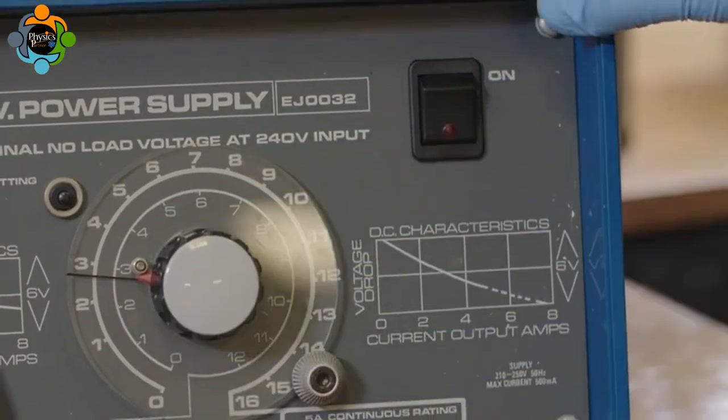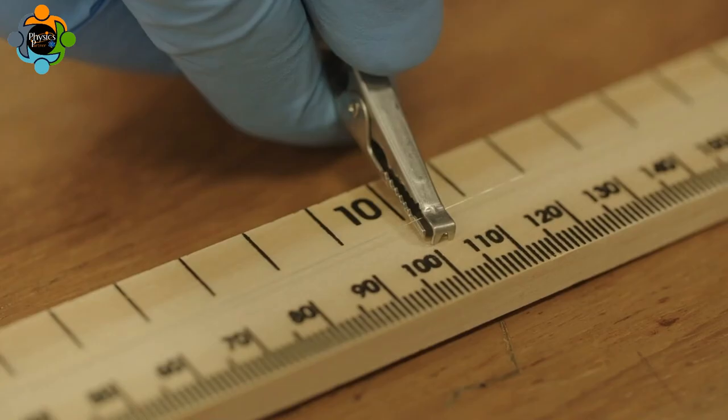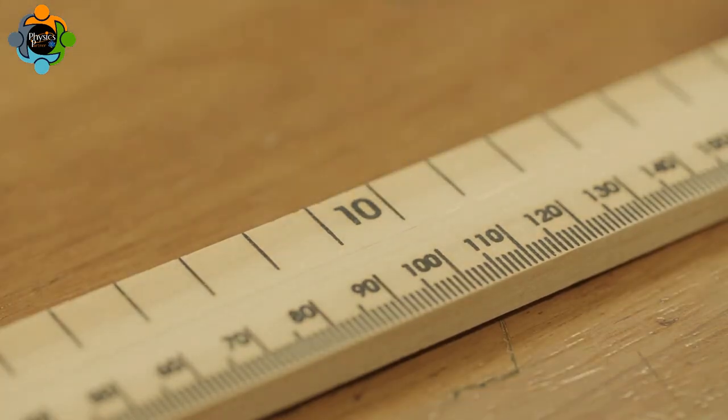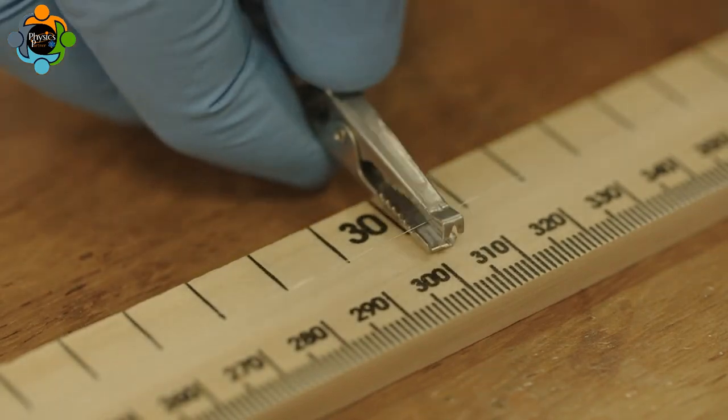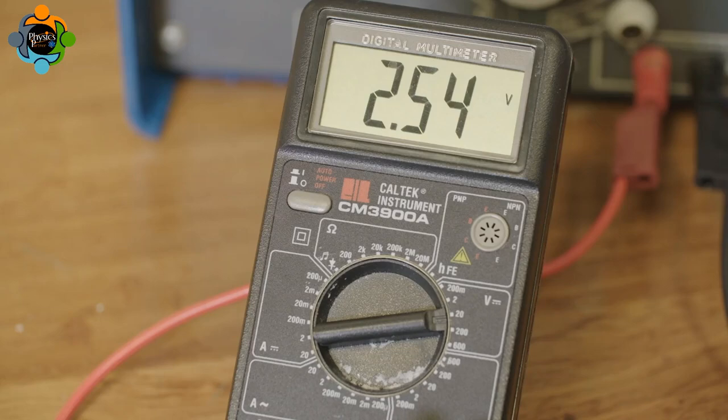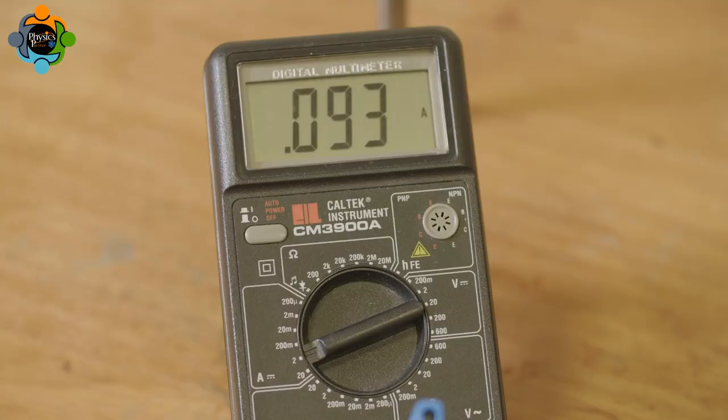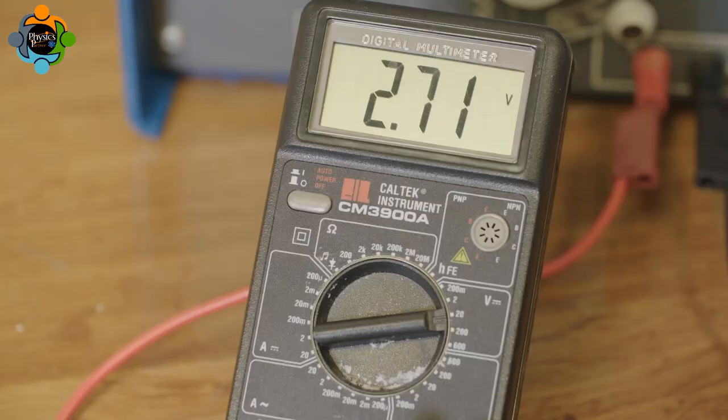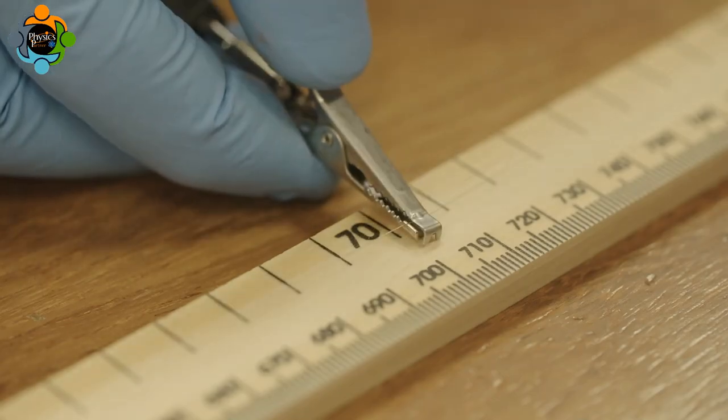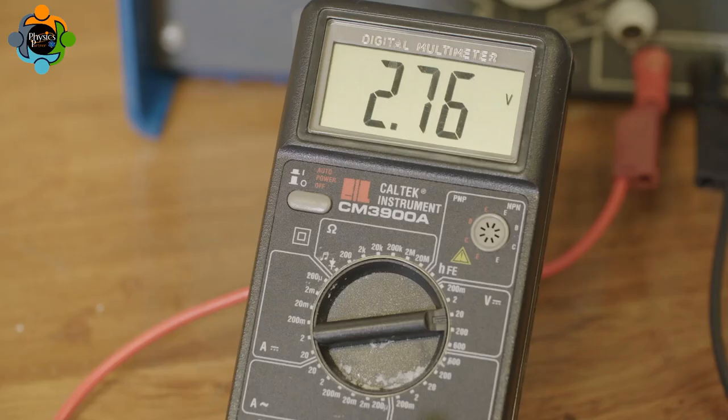After turning on the power, the readings from the ammeter and voltmeter should be recorded. The crocodile clip is now moved from the 10 centimeter to the 30 centimeter point. The levels on the ammeter and voltmeter are recorded. The crocodile clip is moved again to the 50 centimeter mark and the readings are noted. Data should be collected as the crocodile clip is moved along the wire in 20 centimeter increments.